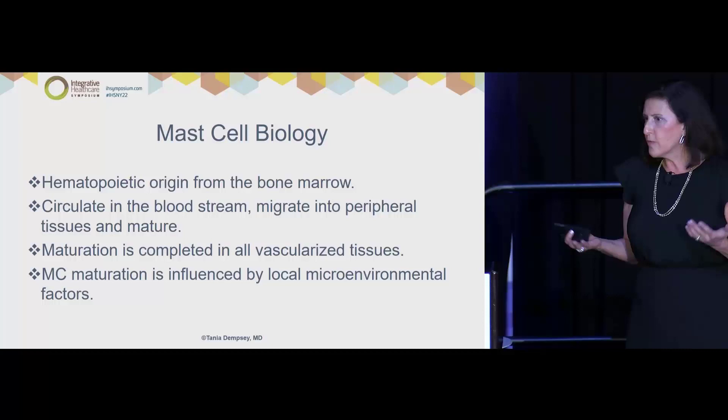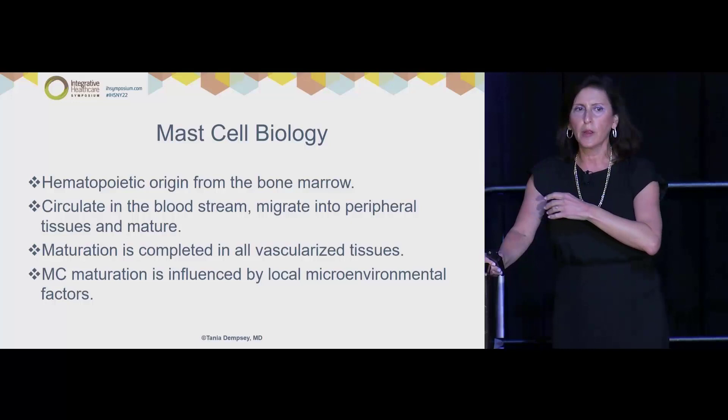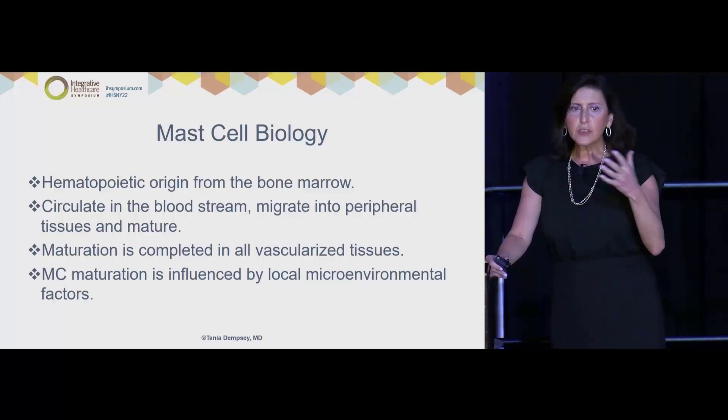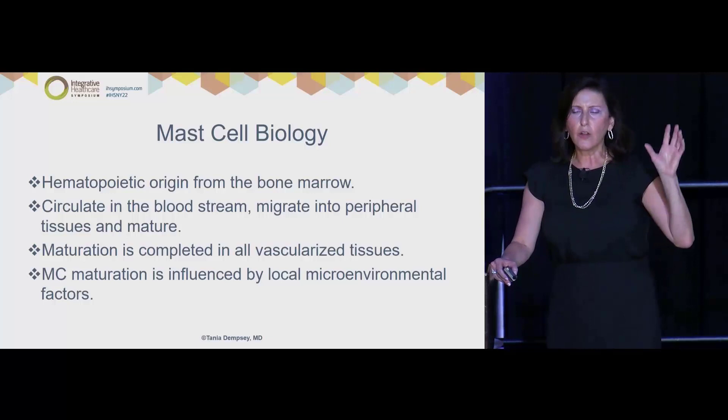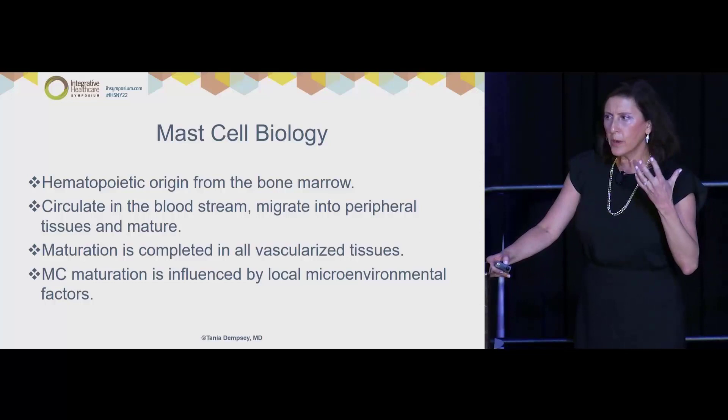I apologize if some of this is a repeat of what you already know, but it's nice to hear it again because it puts it together and makes it easier to understand why things go awry. So, mast cells are produced in the bone marrow, released into the bloodstream, and then go into the peripheral tissues — the organs — where they finish up their maturation process.